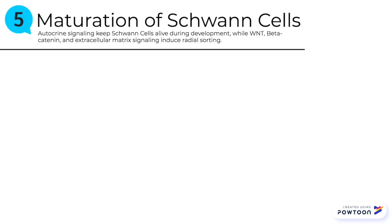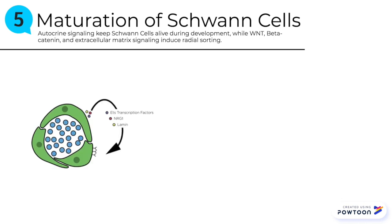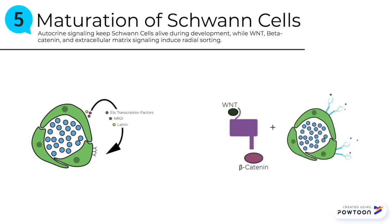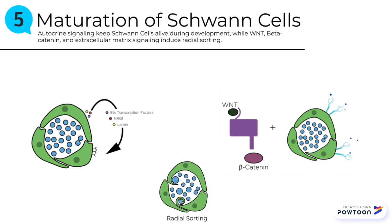The next step of this process is maturation of Schwann cells, which involves autocrine signaling to keep the Schwann cells alive during the developmental process, while Wnt, beta-catenin, and extracellular matrix signaling induces radial sorting. The specific autocrine survival factors used in this process are neuregulin, ETS transcription factors, and Laminin. Immature Schwann cells then undergo radial sorting through the interaction of Wnt and beta-catenin, and also extracellular matrix signaling.